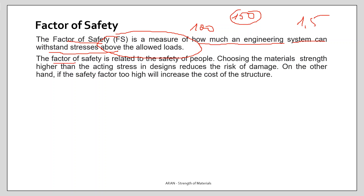The factor of safety is related to the safety of people. By choosing a high factor of safety you reduce the risk of damage, but you must also consider that if you take the safety factor too high, this will increase the dimensions, the material cost, and the overall cost of the structure.